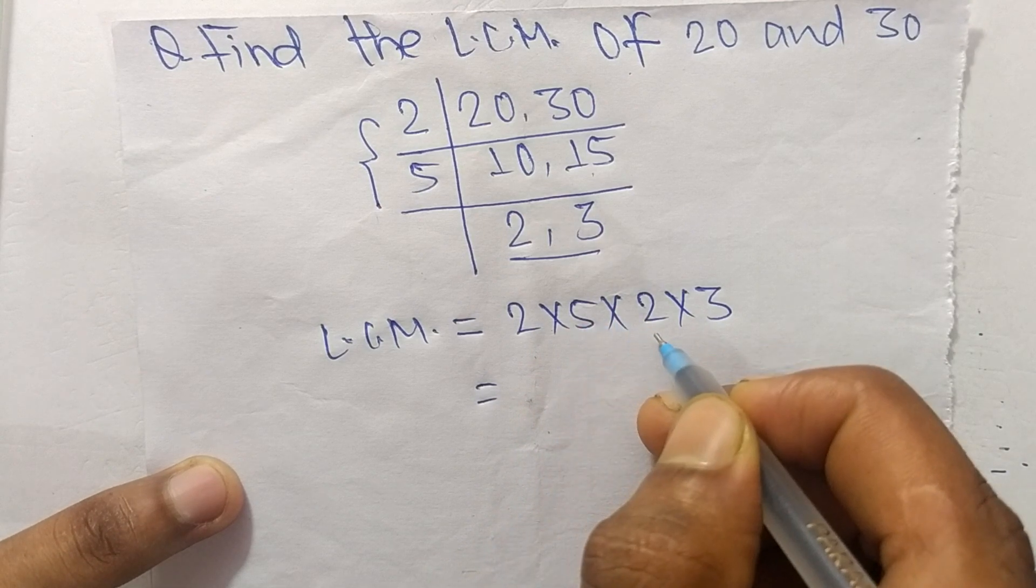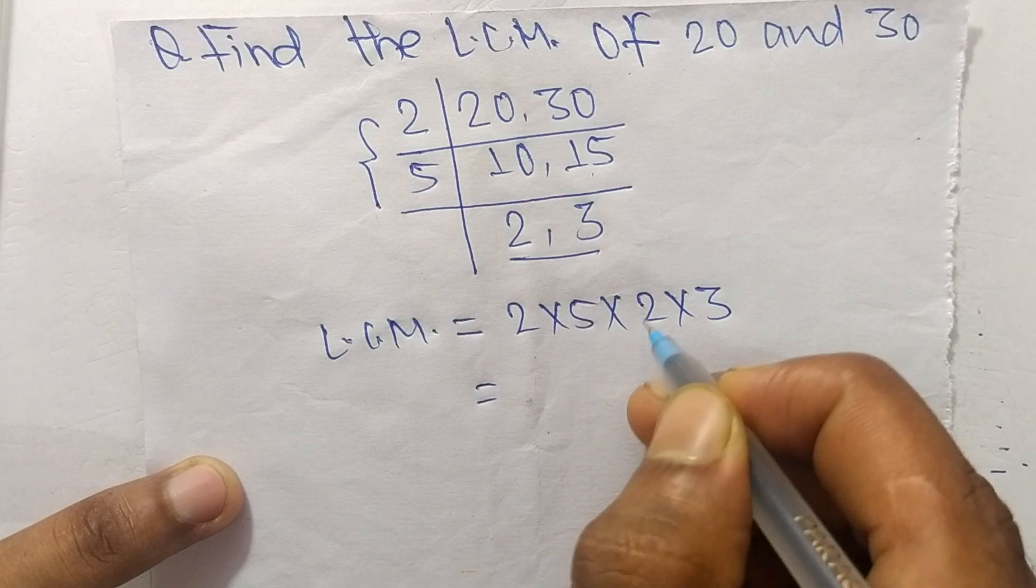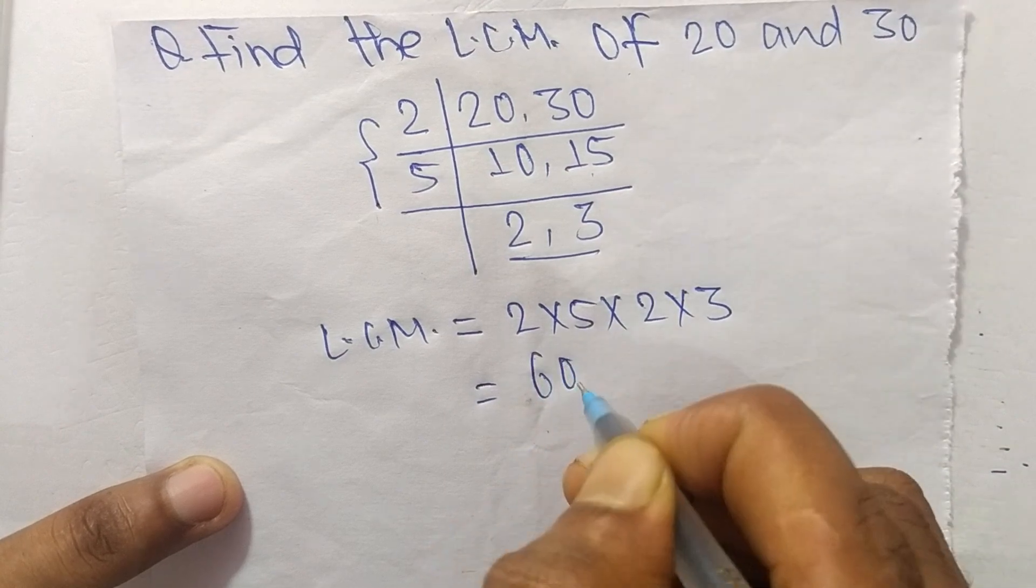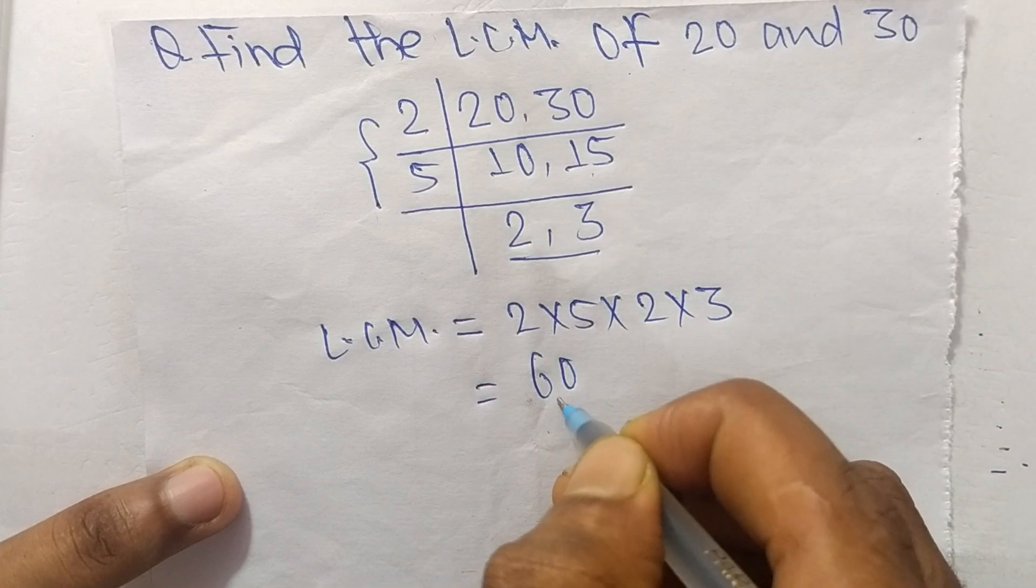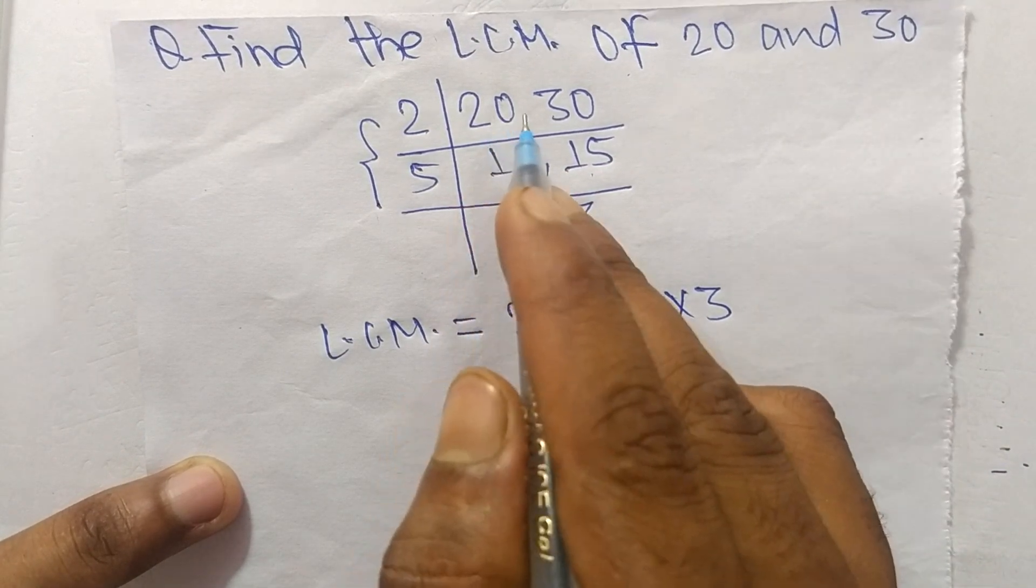times 2 is 20, 20 times 3 is 60. So 60 is the LCM of 20 and 30.